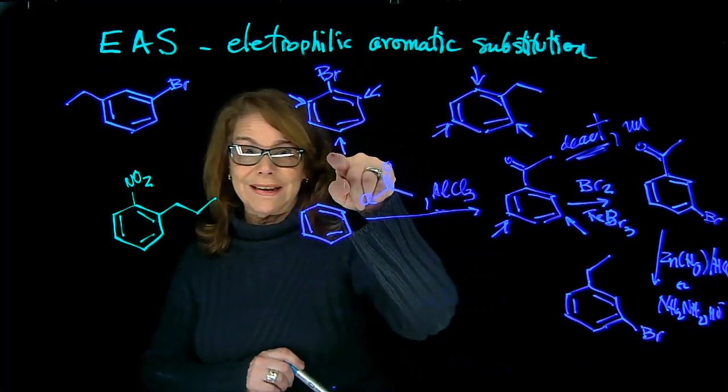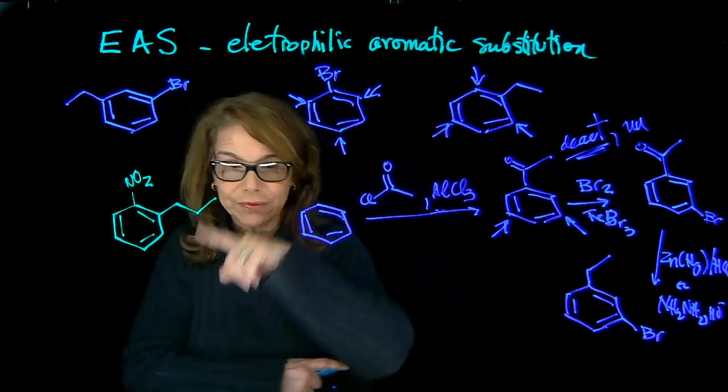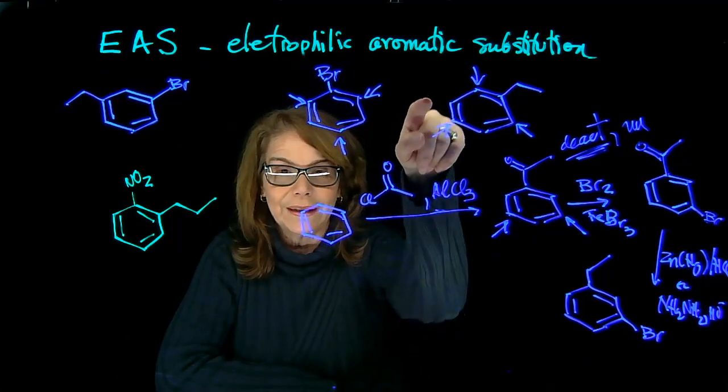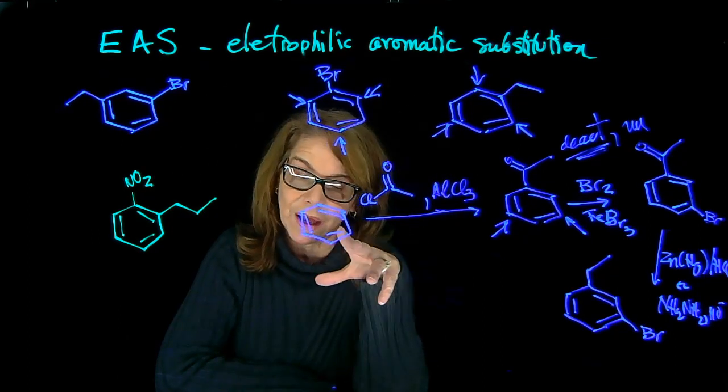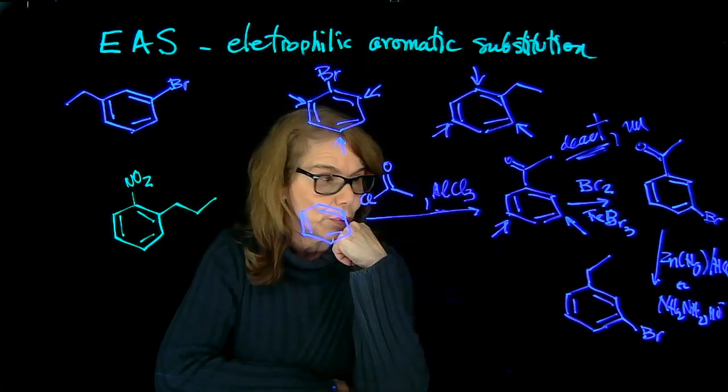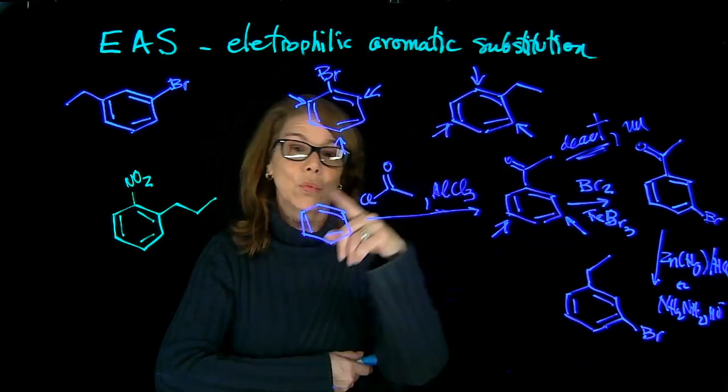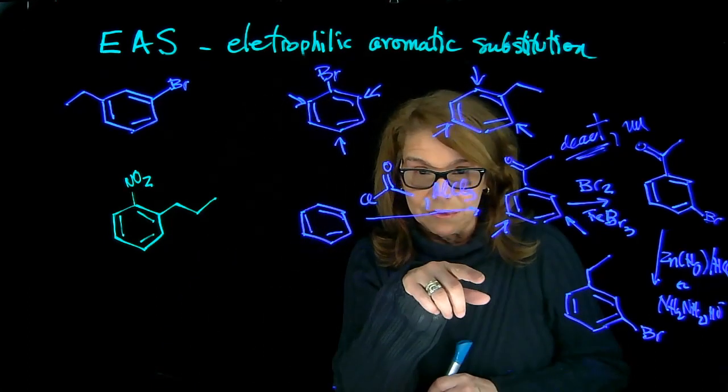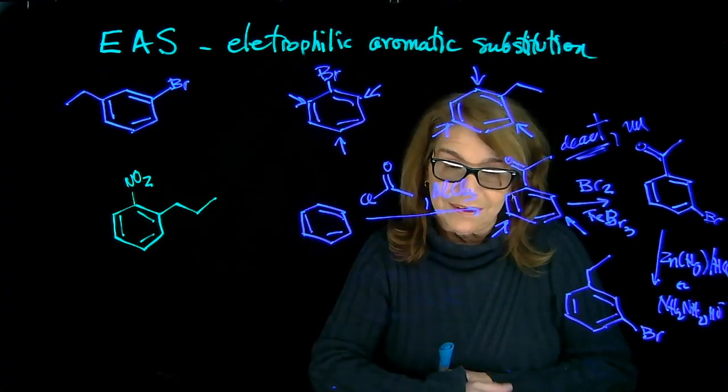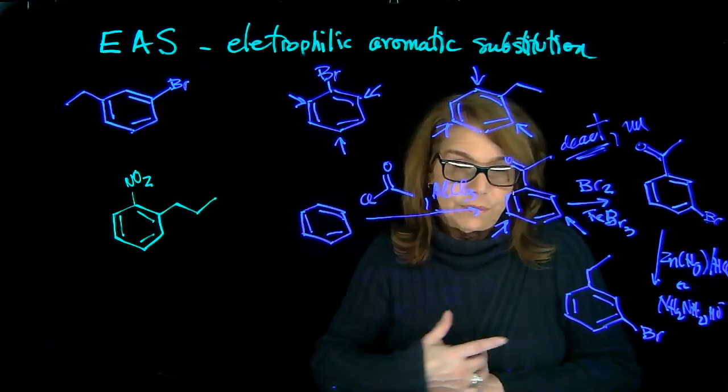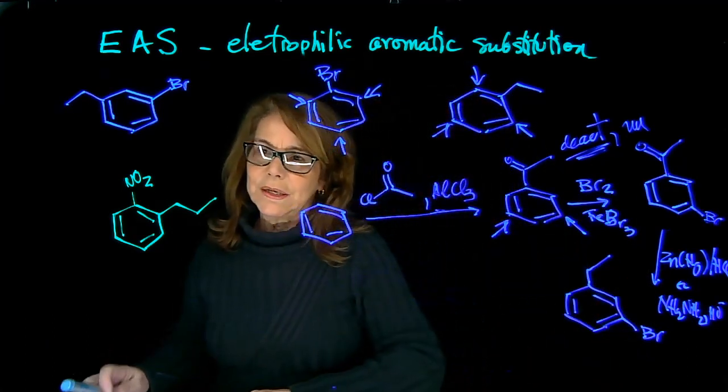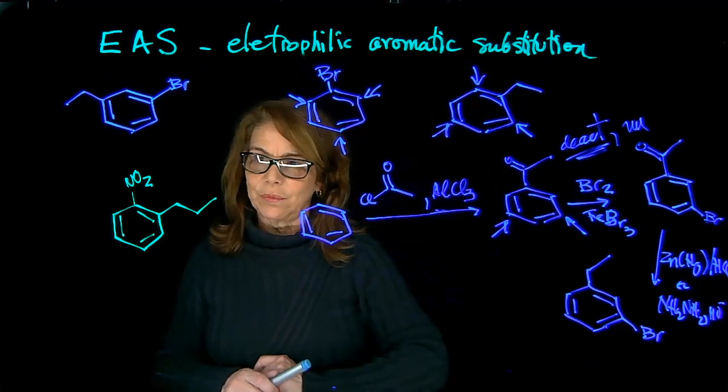Again, notice we first analyzed what if we did bromination first, didn't work. If we did alkylation first, didn't work because we didn't have the substitution pattern that we wanted. And so we decided to do acylation, which actually does the right orientation, and once you have installed the bromine, you can reduce the acetyl group. All right, so let's try to do this one.